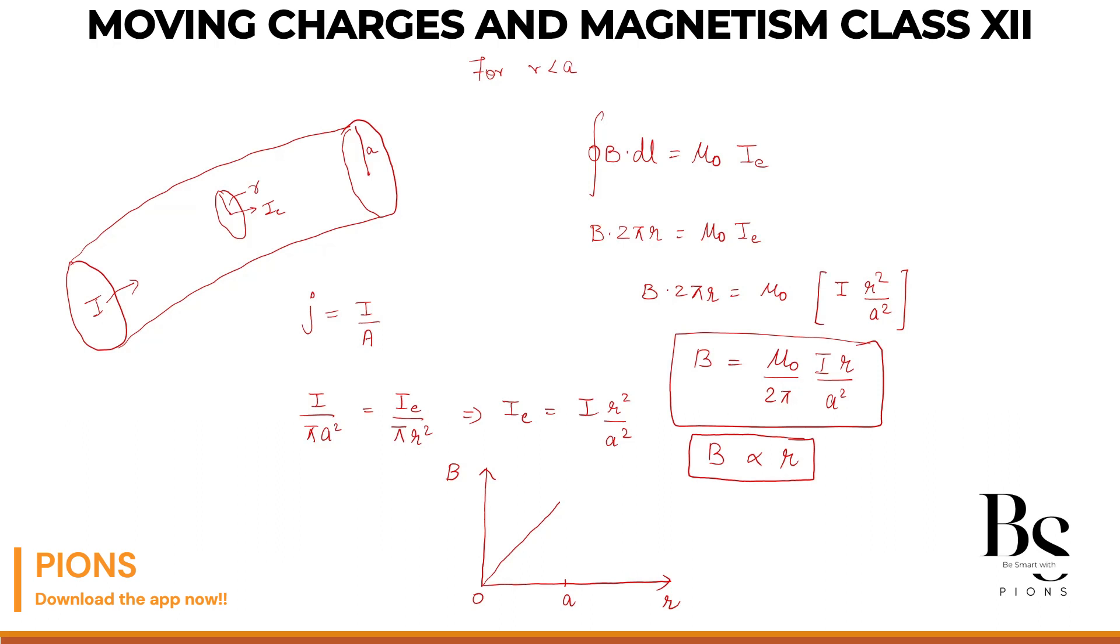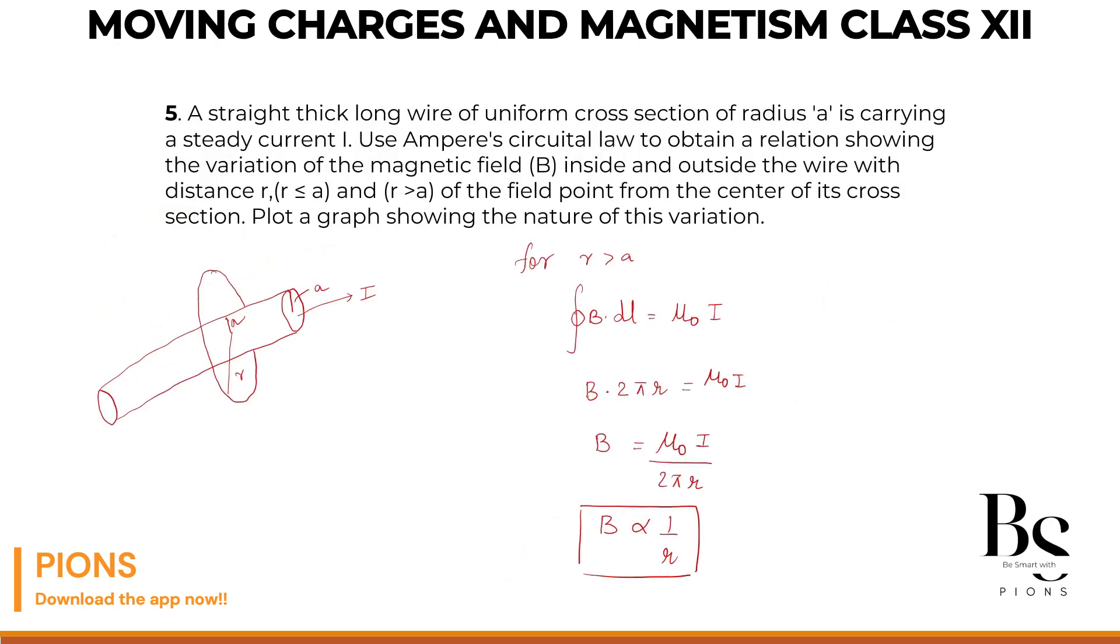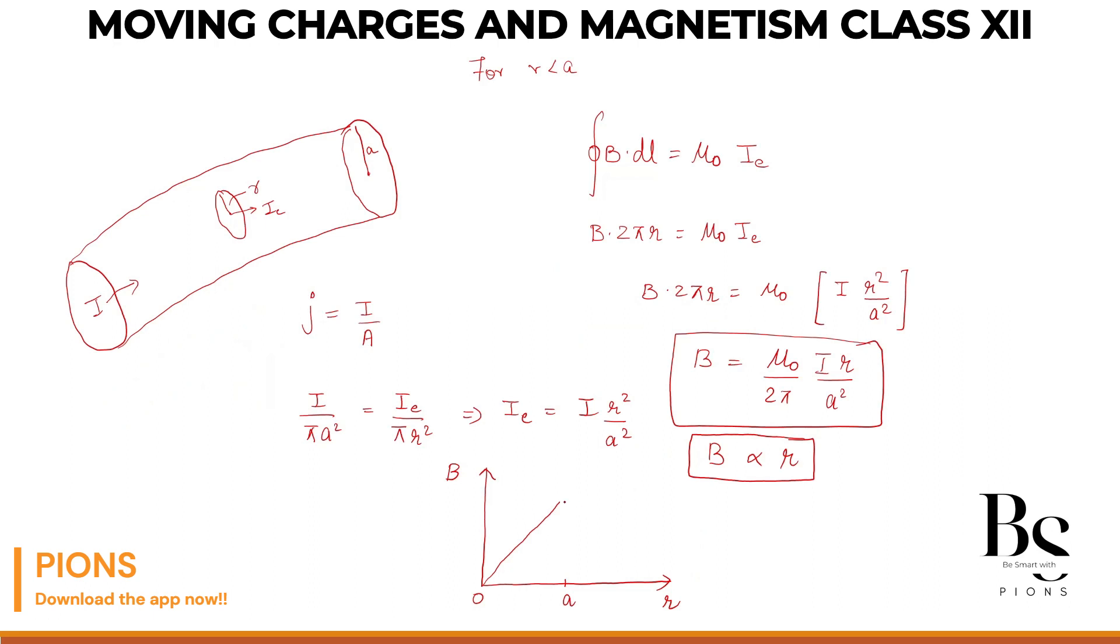Whenever two quantities are directly proportional, the graph will look like this. And what about outside? When R becomes greater than A, beyond this point A, then the graph is B inversely proportional to R. As R increases, B decreases. So you can draw the inversely proportional graph. The curve will be like this. So here B is inversely proportional to R. Here B is directly proportional to R. And A is our that point beyond which this is happening and before which this is happening.